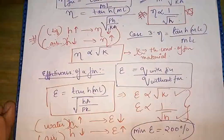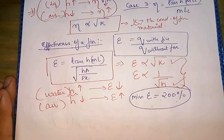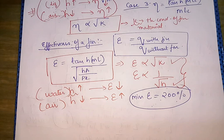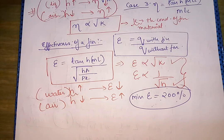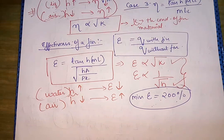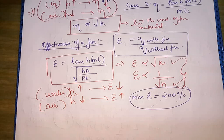Welcome to MechZone. Till the last lecture we discussed about the working of fins — why fins were used — and we derived equations for heat transfer for different types of fins. We discussed three cases: first, when the fin was infinitely long; second, when the fin was of finite length but insulated at the tip; and third, when the fin was of finite length and losing heat at the tip. We also studied the effectiveness and efficiency of the fin.